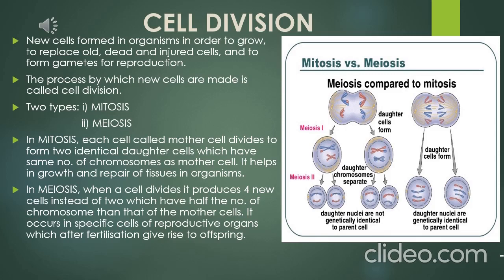A typical cell is made up of three components: cell membrane or plasma membrane, nucleus, and cytoplasm. The cytoplasm contains various cell organelles that perform specific functions. Our last topic of this chapter is cell division — as the name suggests, it involves the division of the cell.